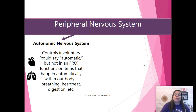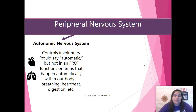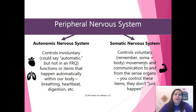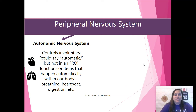The peripheral nervous system includes the autonomic nervous system. Autonomic — you can think 'automatic,' but don't write automatic on the AP test. The autonomic nervous system controls all the involuntary things, so things that happen automatically in the body: breathing, heartbeat, digestion — all that stuff is going to happen whether we think about it or not. The other half of the peripheral nervous system is the somatic nervous system, and these are voluntary things: movements, communication to and from the sense organs. Most of the somatic nervous system content is not included in our thinking part of behavior.